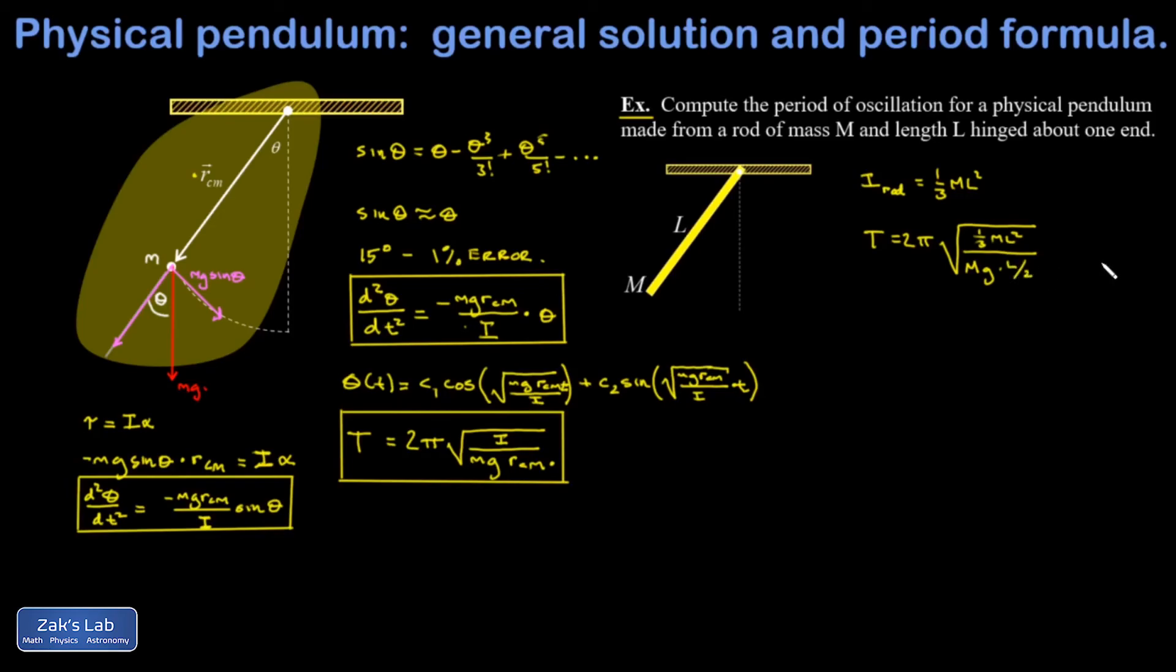My m's cancel out. One factor of L cancels out. And cleaning up my complex fraction, the 2 moves to the numerator and I have 2L. The 3 moves to the denominator and I have 3G.